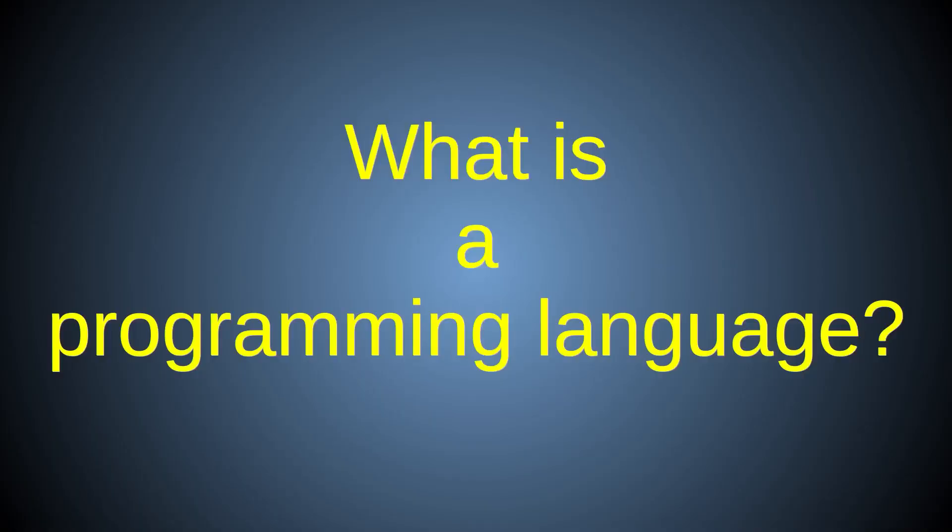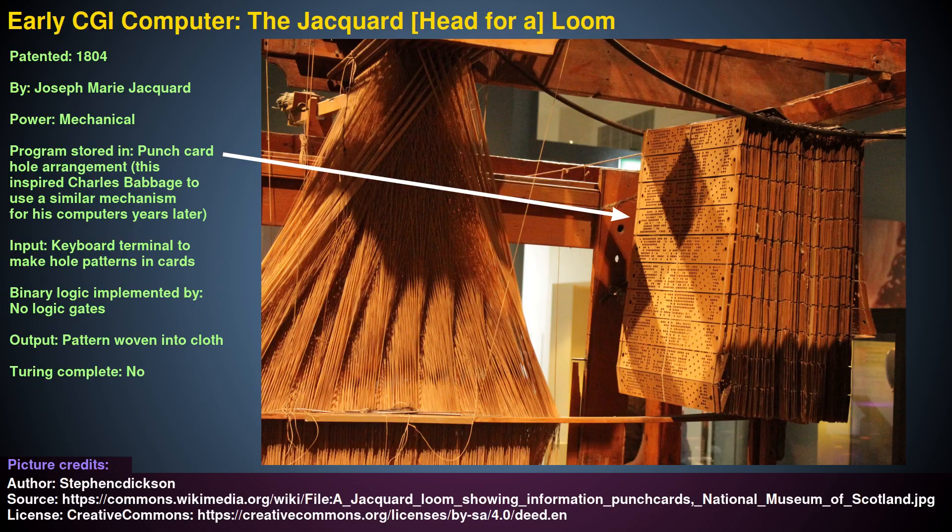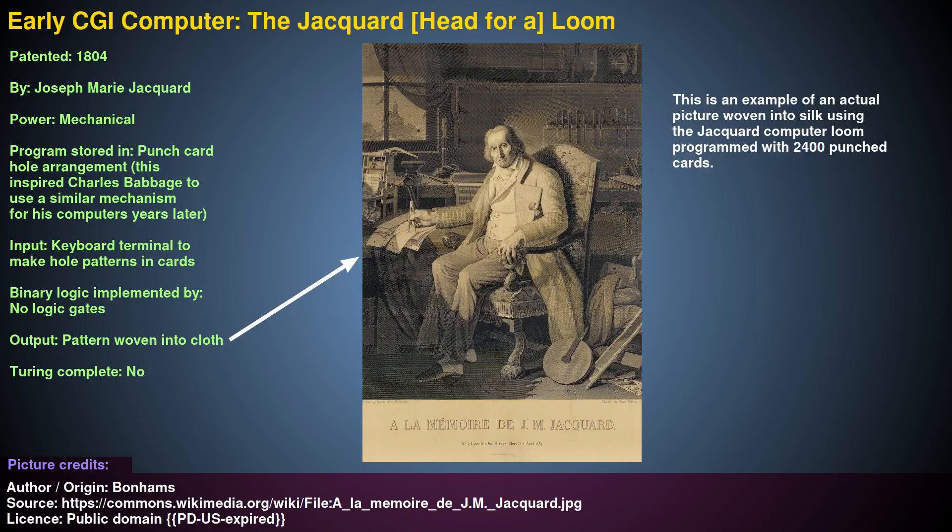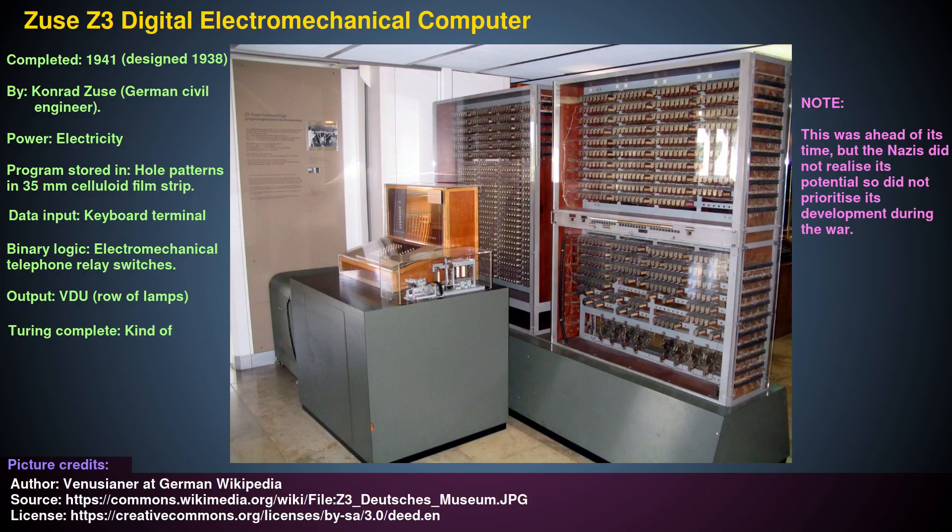In the past, programmable computers were built for single tasks, like computer generated imagery, or CGI, on textiles. Much later, in the 20th century, more general purpose computers were developed at around the 1930s and 40s.